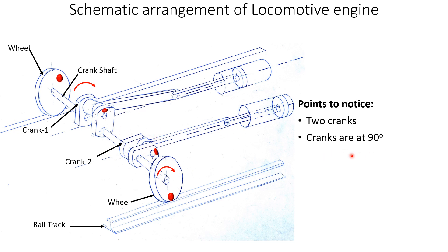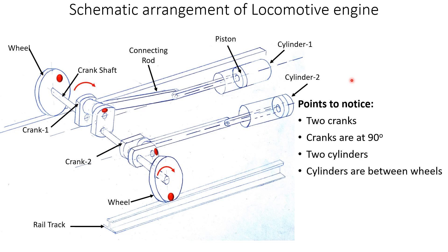We have a connecting rod and a piston for each crank, giving two cylinders, two pistons, two connecting rods, and two cranks. In this figure the cylinders are shown between the wheels. This is wheel 1, wheel 2, track 1, and track 2. In some locomotive engines the cylinders are outside the wheels or outside the rail tracks.